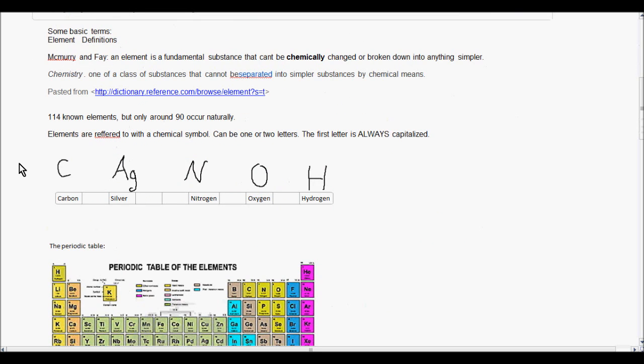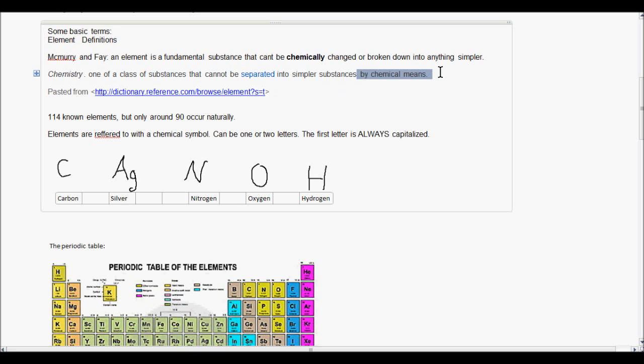So some basic terms that you're going to need to know are elements. An element is basically the fundamental substance that cannot be chemically changed or broken down into anything simpler. Chemically being the key word here. There's a difference between a chemical change and a physical change. A chemical change is where a change in a substance actually changes the chemicals that are inside. So an element is something that cannot be chemically broken down into a more simple substance. From a different book, that's basically in a nutshell. One of the class of substances that cannot be separated into a simpler substance by chemical means. Chemical being the key term here, just different means to break things down.